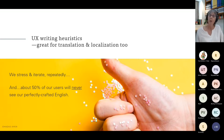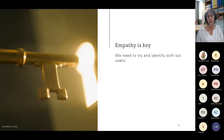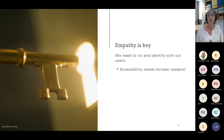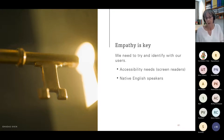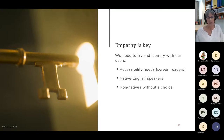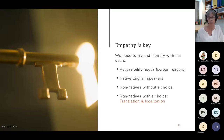We need to balance the best English version with the most translatable version, regardless of how painful that might be in terms of making concessions with our language. We use UX writing heuristics, and they work for source copy, translation, localization, and accessibility. Empathy is key — we need to identify with our users, taking into account accessibility needs such as screen readers, the needs of native English speakers, non-natives who must read our English, and non-natives who get translation and localization.